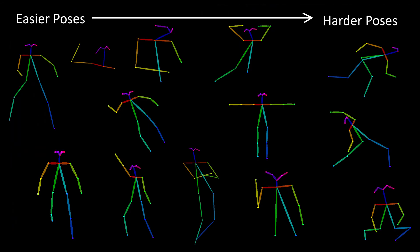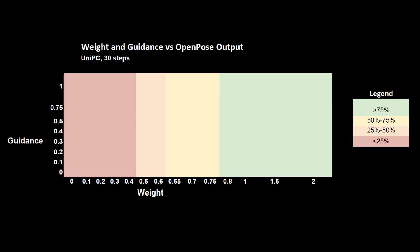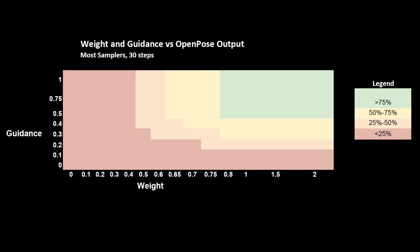Now, for the moment you've all been waiting for — it's time for the charts. These charts are meant to represent the accuracy of OpenPose with a standard human pose. If you use something hard like a yoga pose, the accuracy will be lower than estimated here. For the first chart, we have UniPC at 30 steps. Since UniPC is not impacted by guidance, the only effect here is for weight. You should be fine until around 0.8, with accuracy falling off until 0.3, after which it is basically pure luck. This next chart is for all the samplers except UniPC at 30 steps. At a guidance of 0.5 or above, the chart is identical to the UniPC chart because guidance really isn't a factor at these levels. Accuracy starts being lost below weights of 0.8 and OpenPose is basically useless below 0.3. When guidance is lower than 0.5, you start to see a decrease in accuracy as well. 0.4 to 0.3 can be hit or miss, and at 0.2, OpenPose is really going to start to struggle. Any lower than that is going to be pure luck.